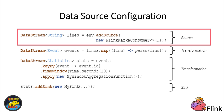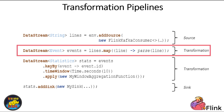Once you have a data source in place, you can define a series of transformations on the Datastream. These transformations allow you to process the incoming data. For example, you can parse raw strings and convert them into meaningful Java objects tailored to your domain. You also have the flexibility to add custom processing functions to the pipeline. These functions conform to a specific interface, enabling you to implement your own logic for data processing. Moreover, these transformations provide access to Flink's fault-tolerant state management, ensuring data consistency and reliability.